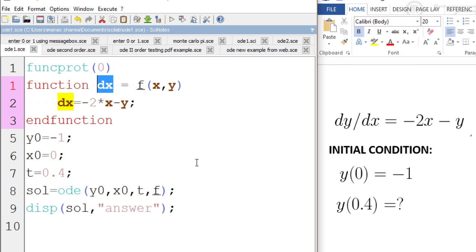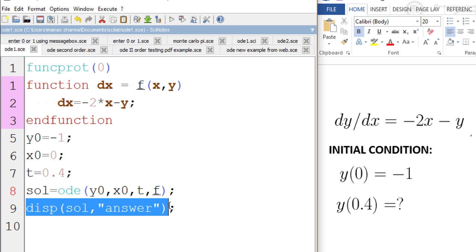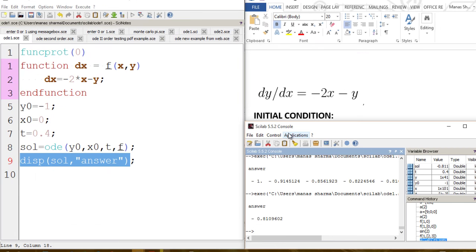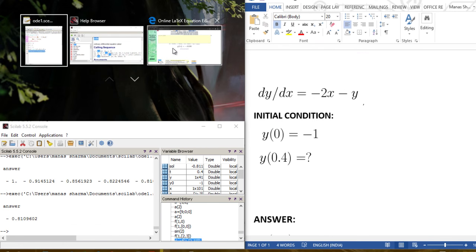Now the solution of the ODE: when I call this function ODE, Scilab would take these initial values and find out the value of the function f at t, which was the required answer. I am storing this value in sol, which stands for solution, and then you can display this solution using disp(sol, 'answer').